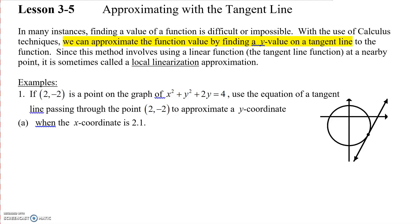We're going to find our derivative. This one is a circle, so we're going to do this implicitly. 2x plus 2y y' plus 2y' equals 0. Solving for y', I get negative 2x over 2y plus 2.